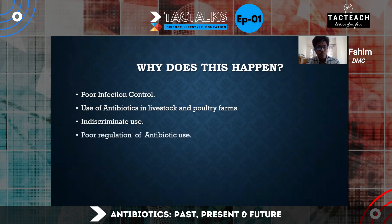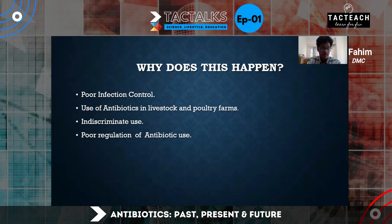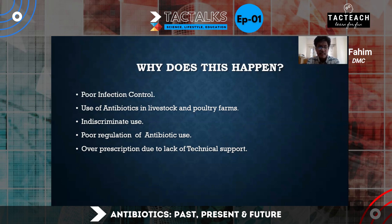The fourth point is poor regulation of antibiotic use. In many places, antibiotics can be obtained without a proper prescription, which is not right. The fifth point is over-prescription of antibiotics due to lack of technical support — when diagnostic facilities are not available, physicians may have to prescribe antibiotics blindly, which may also contribute to resistance.